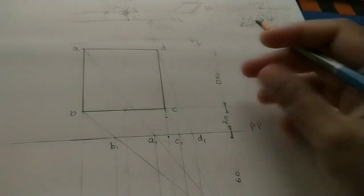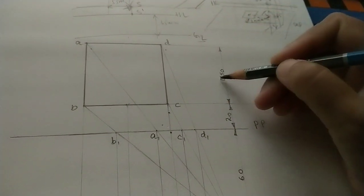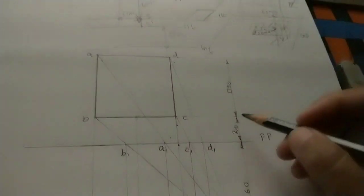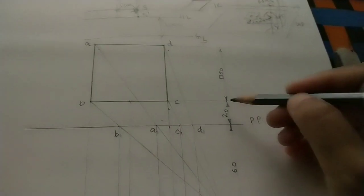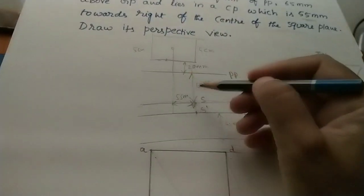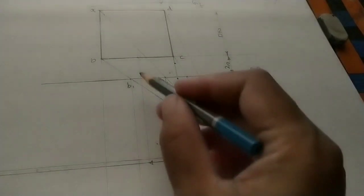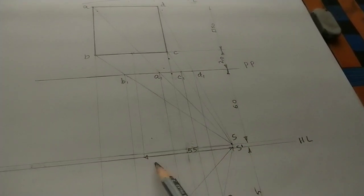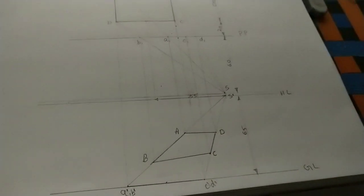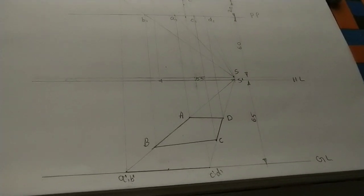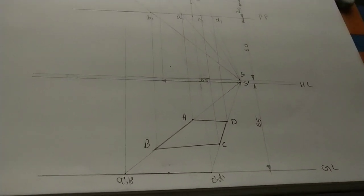Mark the given dimensions: square side is 50 mm — mark one side as 50. Then mark 20 mm gap from square to PP, then 60 mm from PP to station point, then 55 mm from center to station point, and 65 mm vertical height. This is the method of doing the perspective view of a given plane. If you like this lecture, hit the like button, subscribe to my channel, and share with your friends. Thank you for watching.